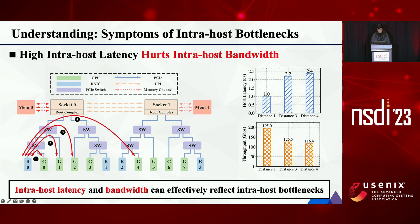We tested the GDR bandwidth at distances 1 to 4 and used memory-mapped host tools to measure PCIe latency. As shown in the figure, from distance 1 to 4, the PCIe latency increases from 1 microsecond to 2.4 microseconds, and the bandwidth degrades from near line rate to around half the line rate. The reason is that RNIC limits the maximum outstanding PCIe read requests. When intra-host latency increases, the limited in-flight bytes cannot saturate the intra-host links, and thus intra-host bandwidth degrades.